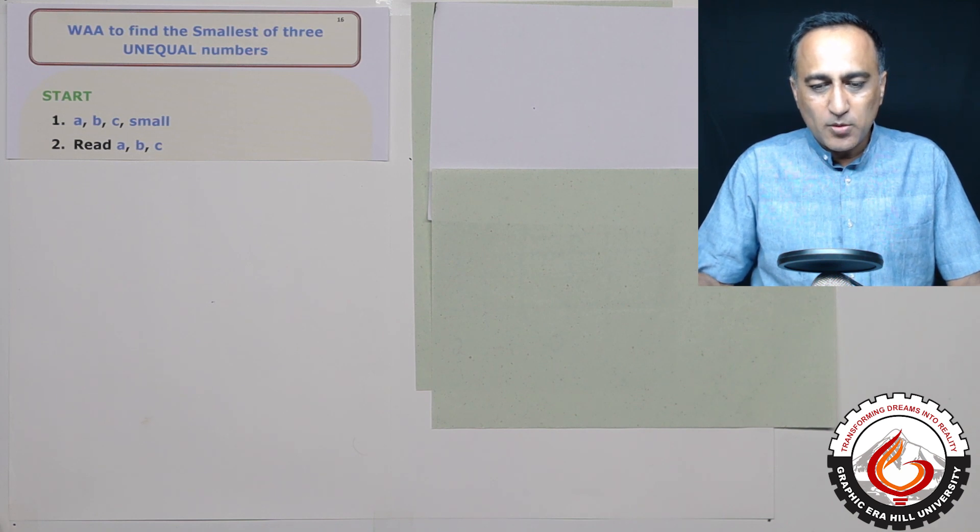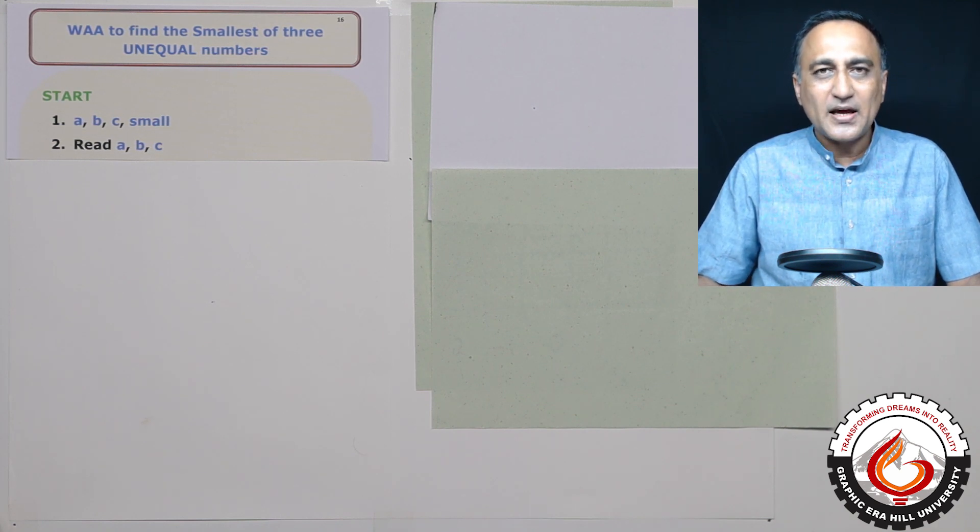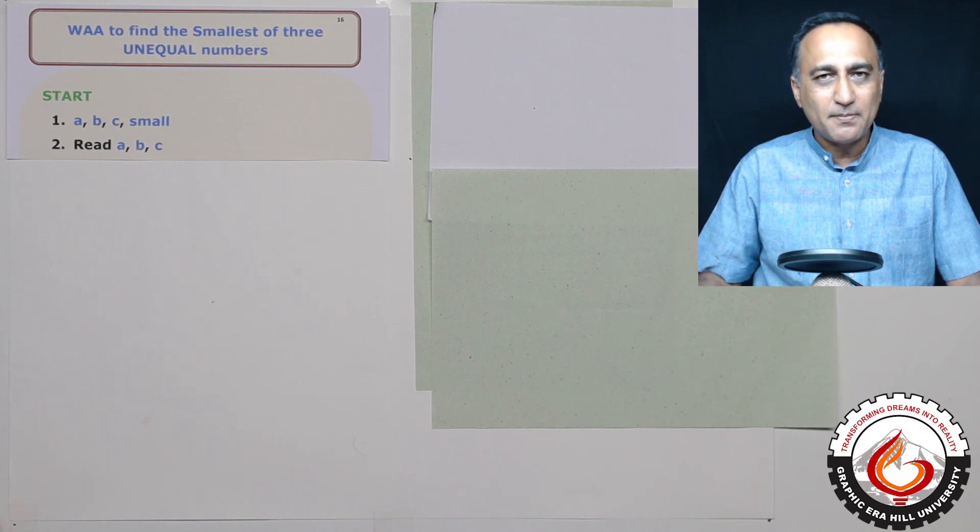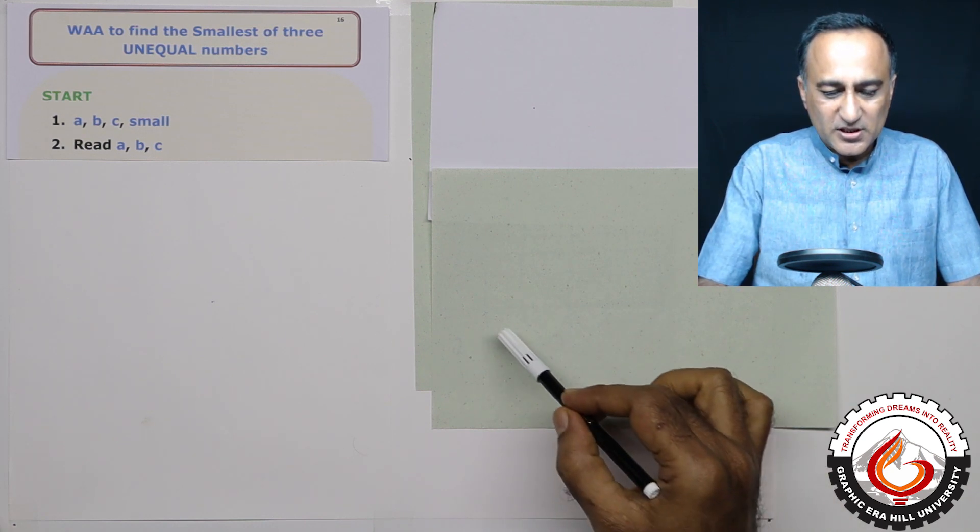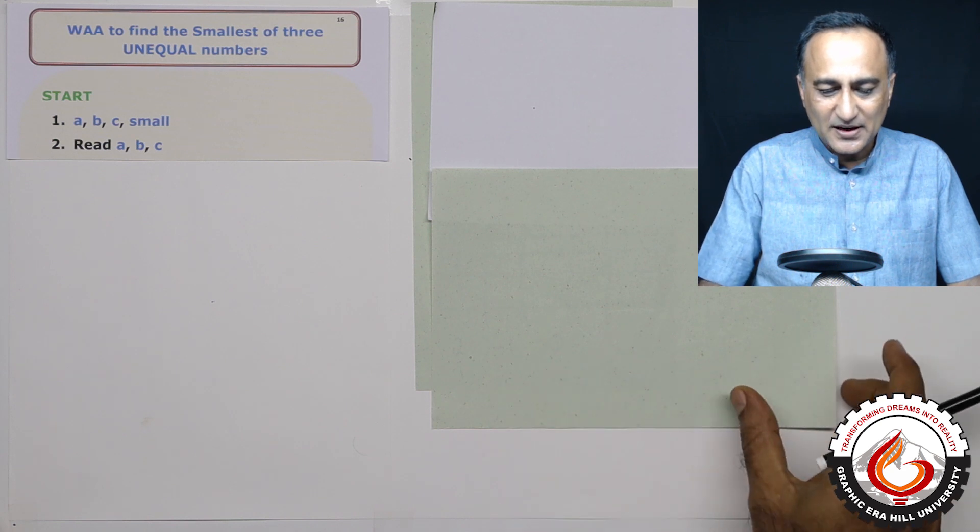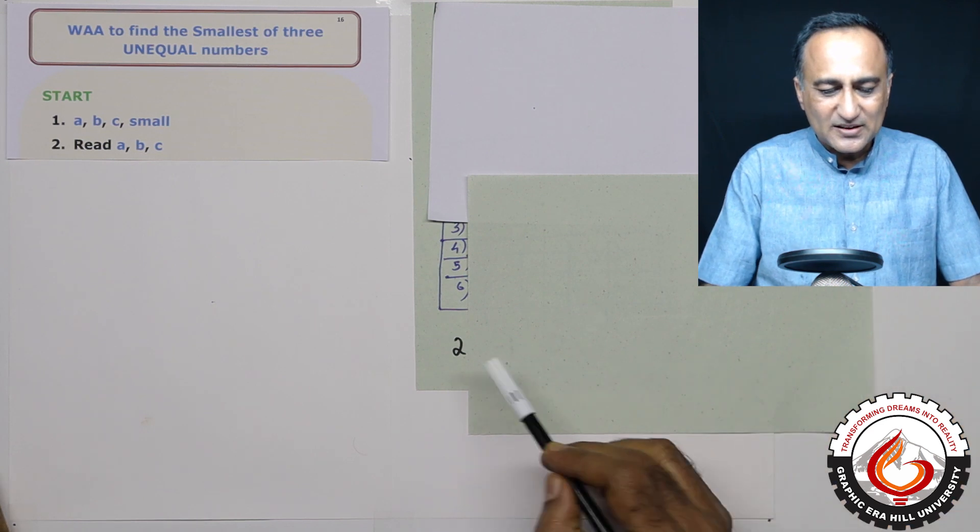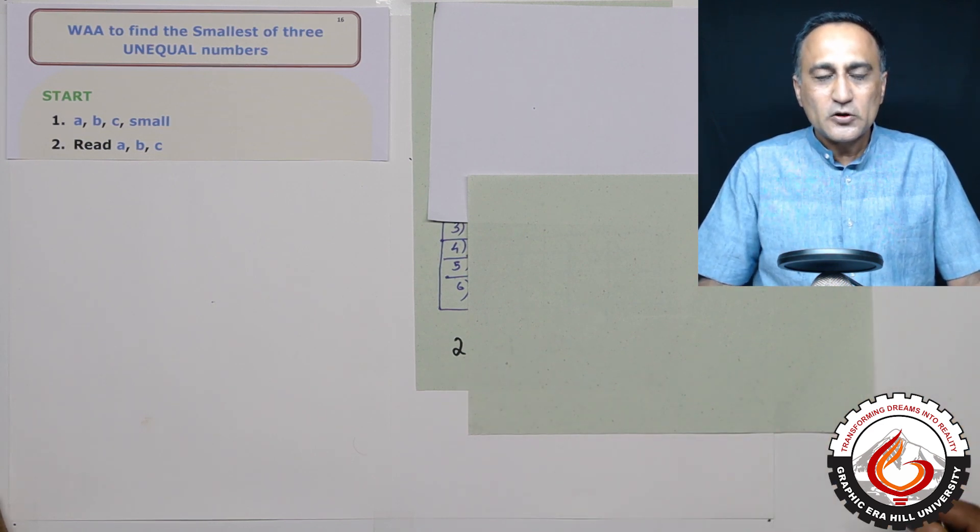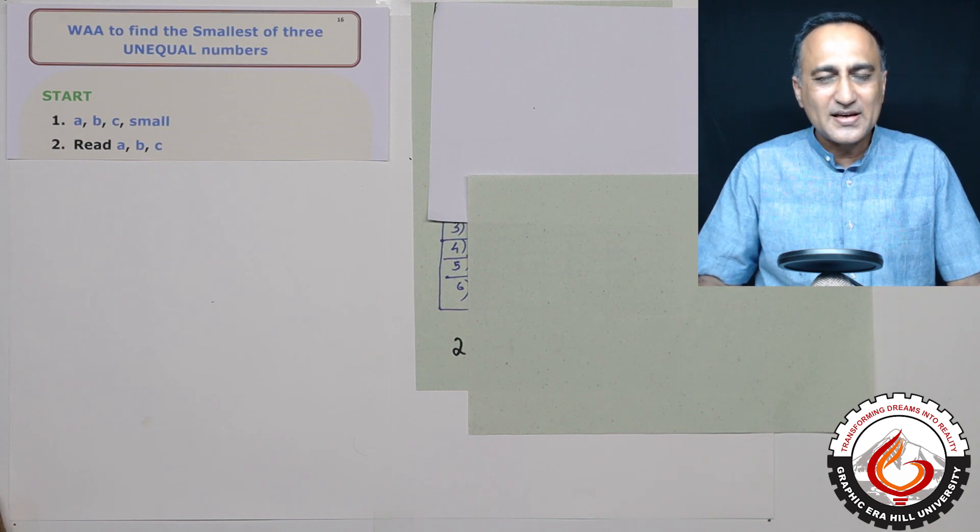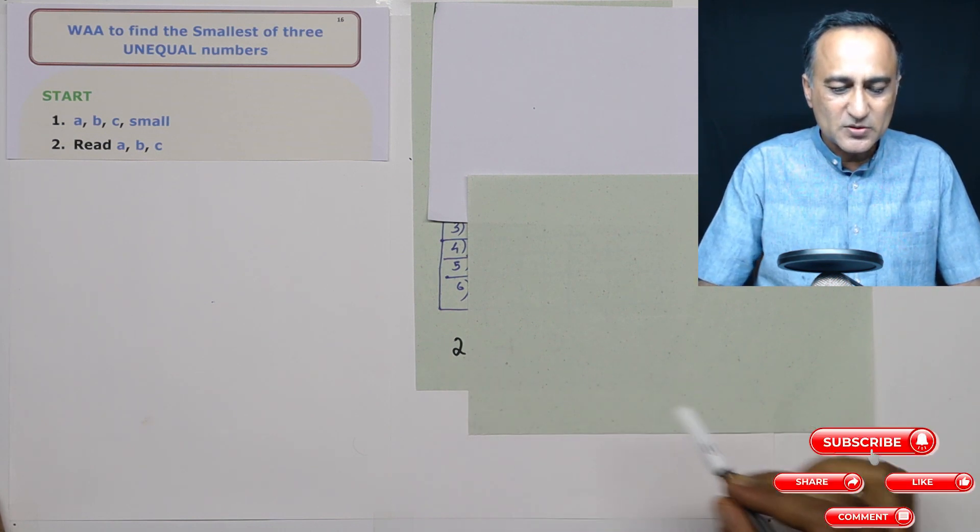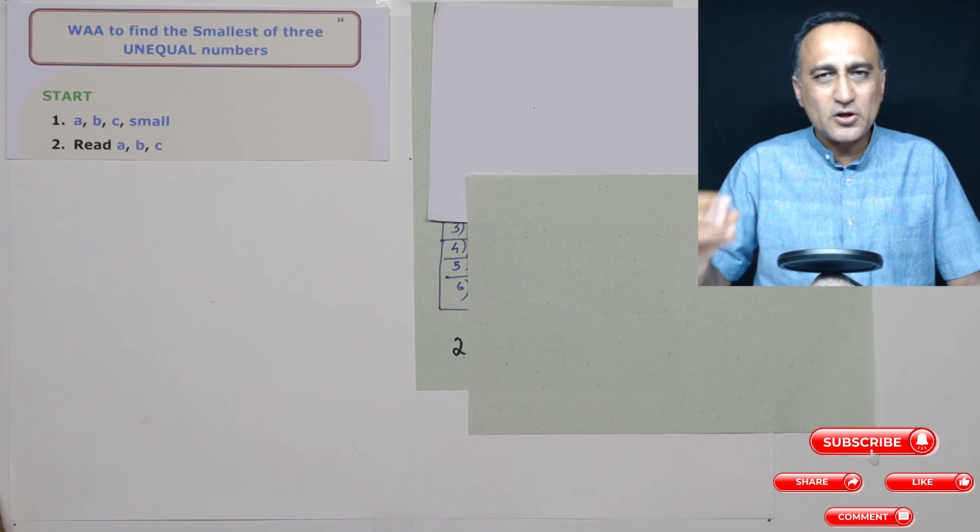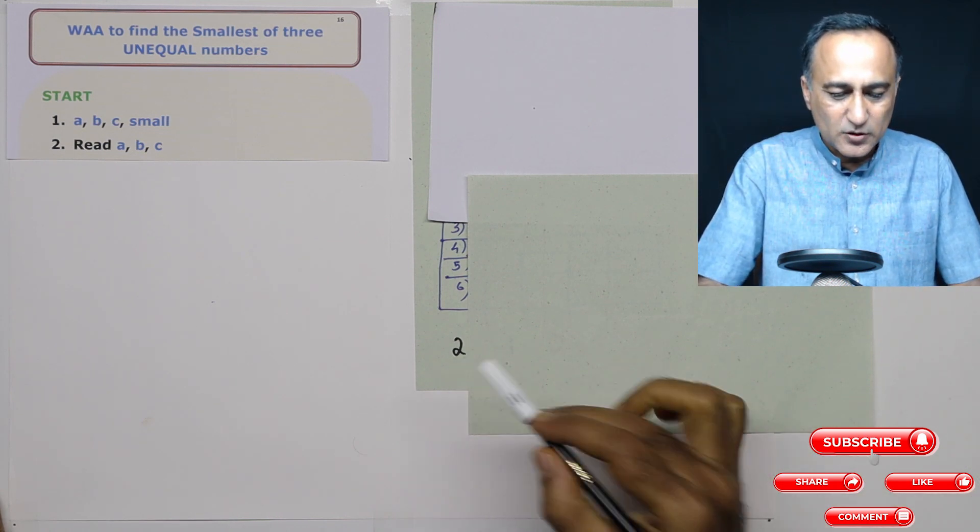Before we develop the algorithm, let's first try to understand how the human mind processes such a problem. Look at this portion of the screen. If you see the number 2, and I ask you at this point what is the smallest number, without hesitation you will say that 2 is the smallest number. So in your mind, somewhere you have stored the smallest as 2.